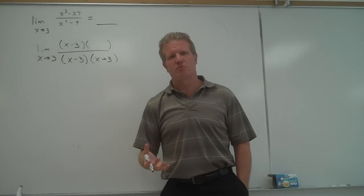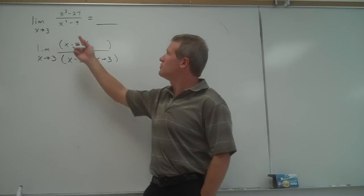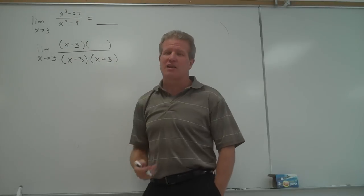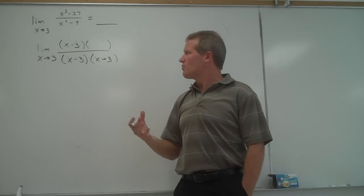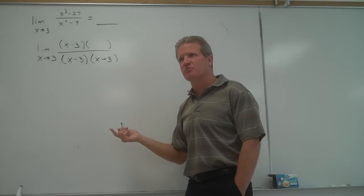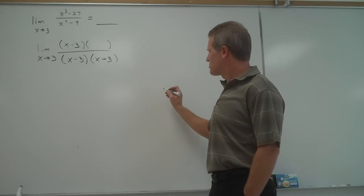So if you know the formula for factoring a difference of cubes, this is x cubed minus 27, you could use that. A lot of people don't know that. So what we're going to do to find this missing factor is divide. Let me show you something like this.